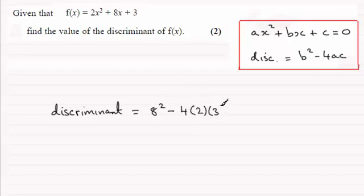So there's your discriminant and what we've got then is 64 minus 24. Okay which is going to leave me with 40. Discriminant then is 40.